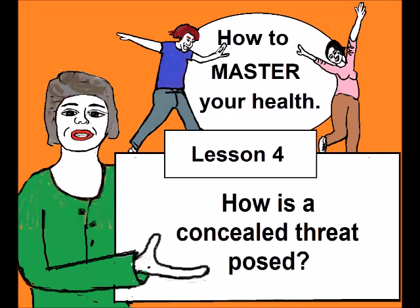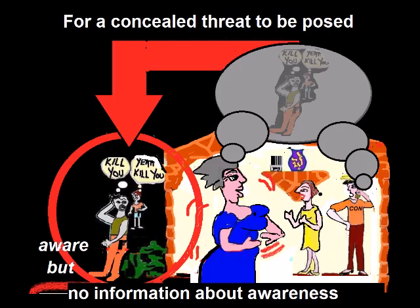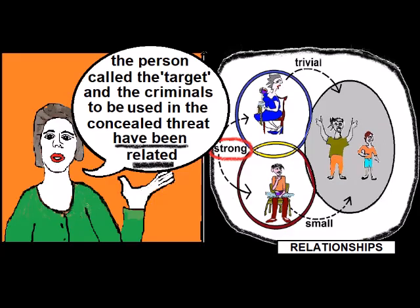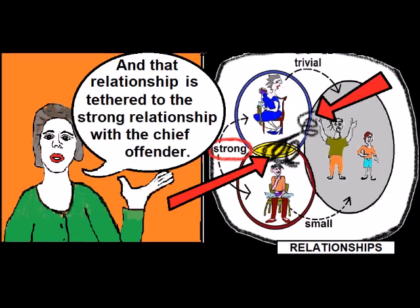Hello and welcome. This is lesson four: how is a concealed threat posed? For a concealed threat to be posed, it depends on the conditions that have been put into place previously. The person called the target and the criminals to be used in the concealed threat have been related, and that relationship is tethered to the strong relationship with the chief offender.